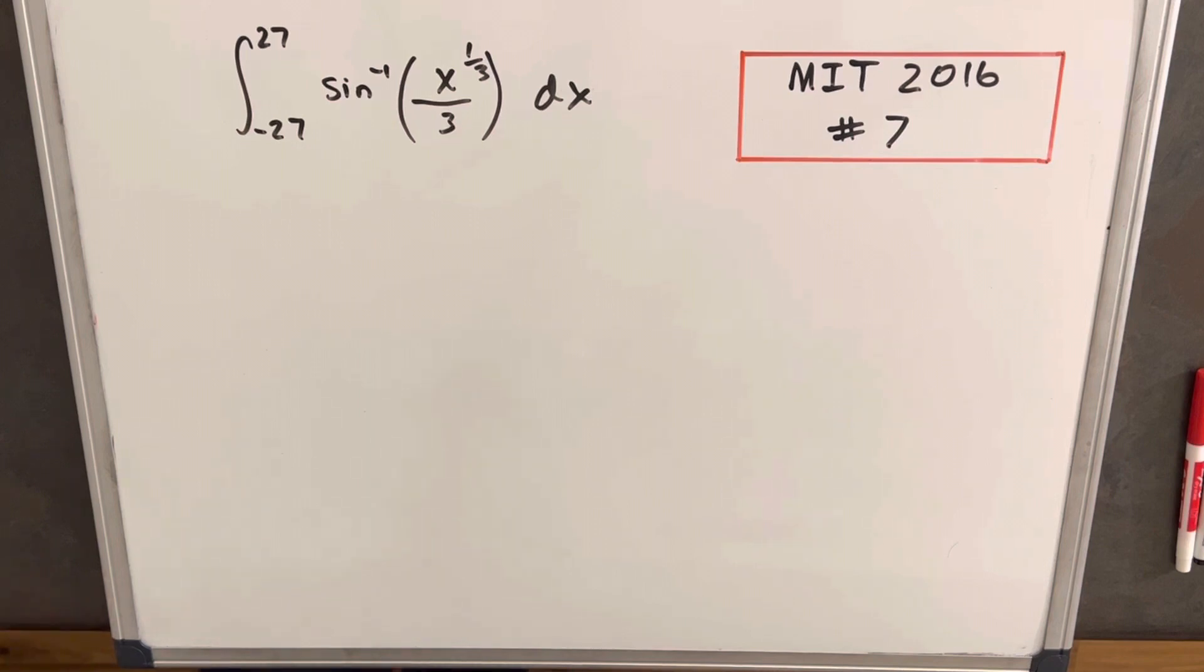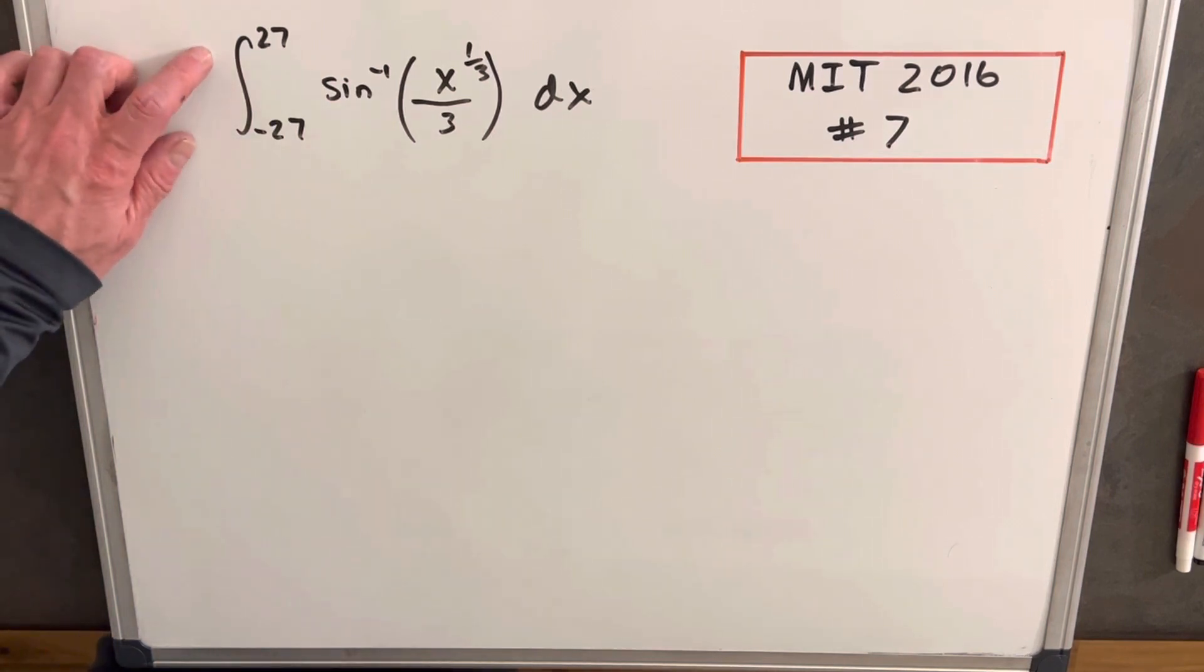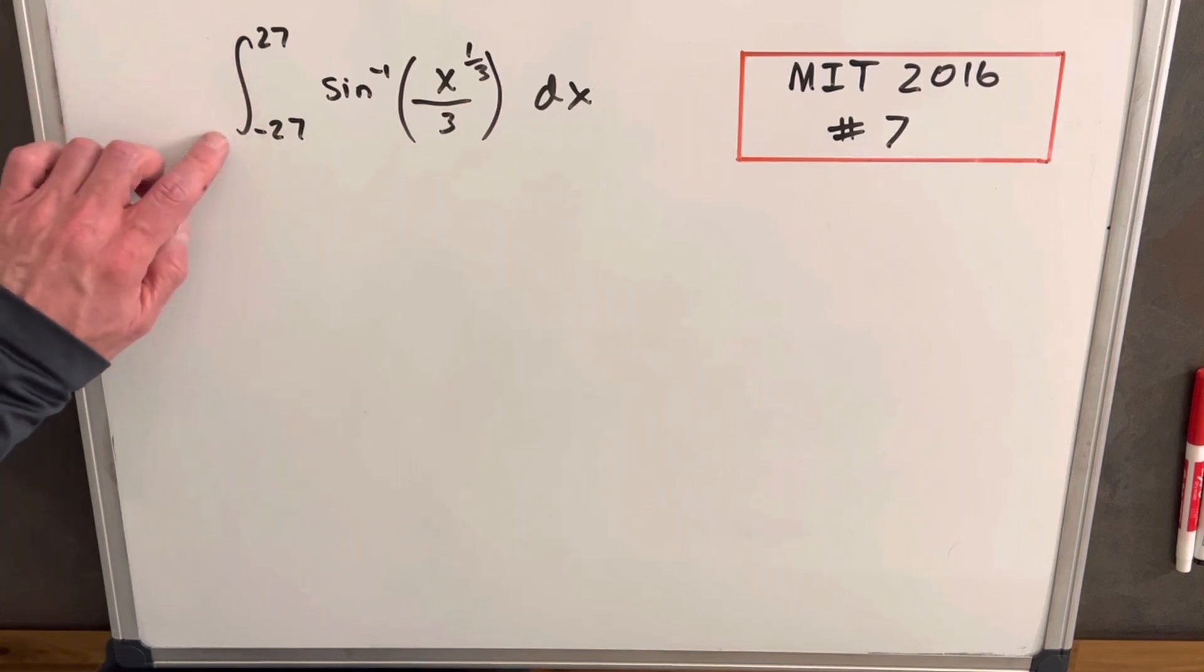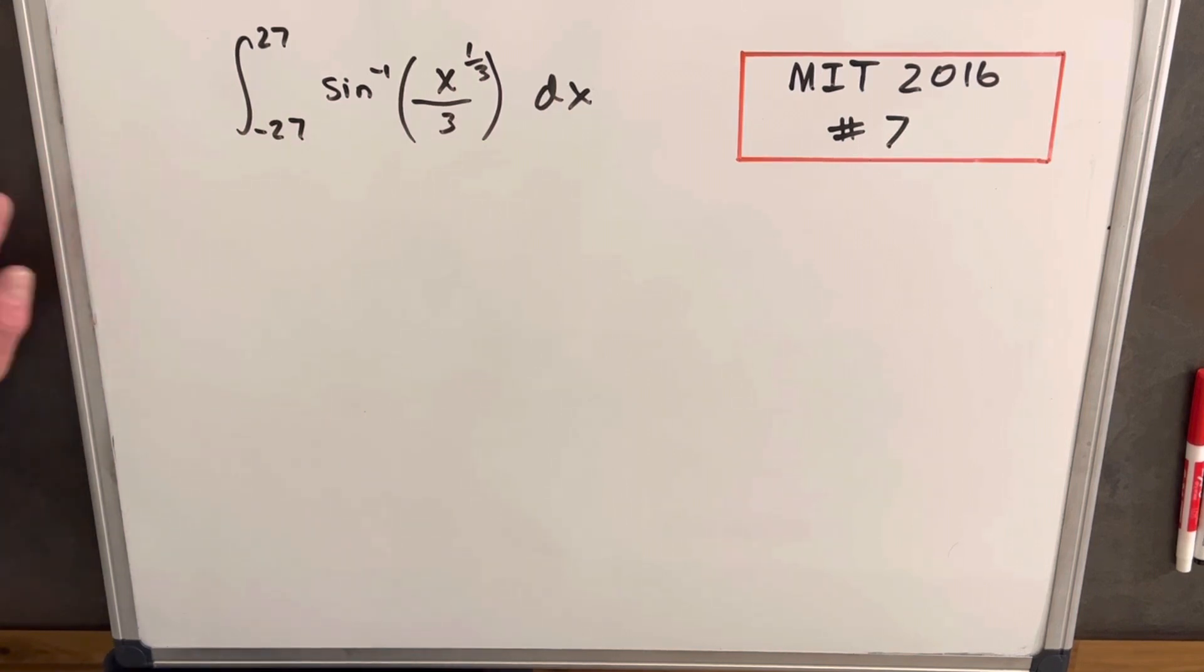Okay, the thing that jumps out to me right away is this situation where whenever I see the top bound is the negative of the top bound on the bottom, I'm always thinking about odd functions because if this is an odd function, this is going to be equal to zero.